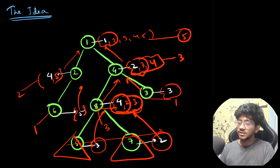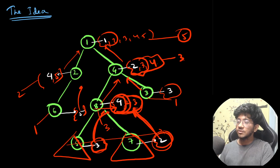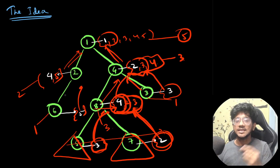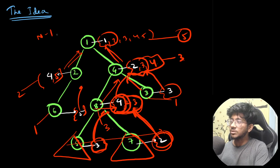What we're essentially doing is converting single values into sets and then merging sets together — merging this set with that, that set with this, and so on. The number of set merges that happen is exactly equal to the number of edges, which in a tree is N minus one. So there are N minus one merges or union operations.